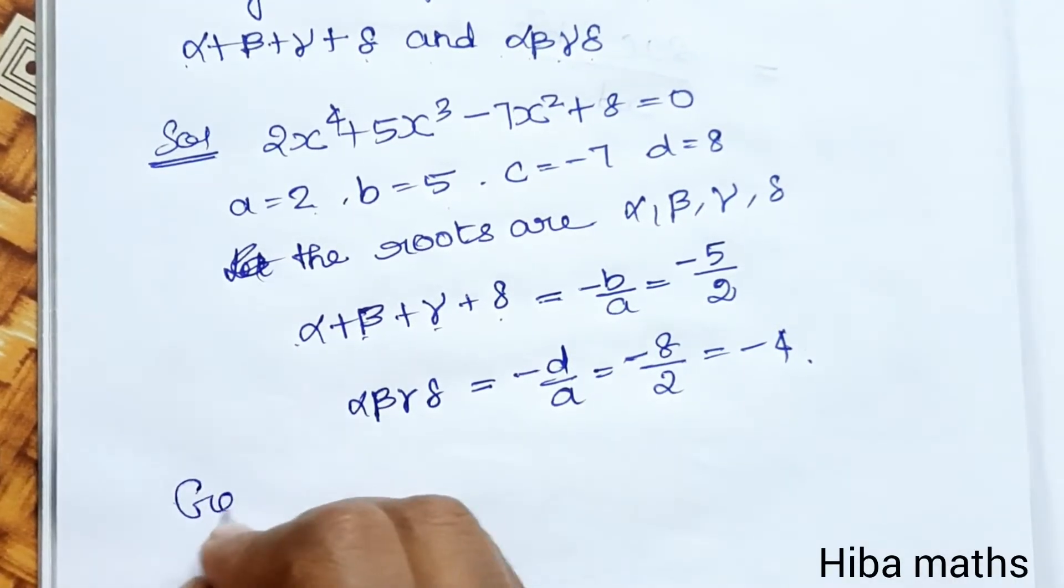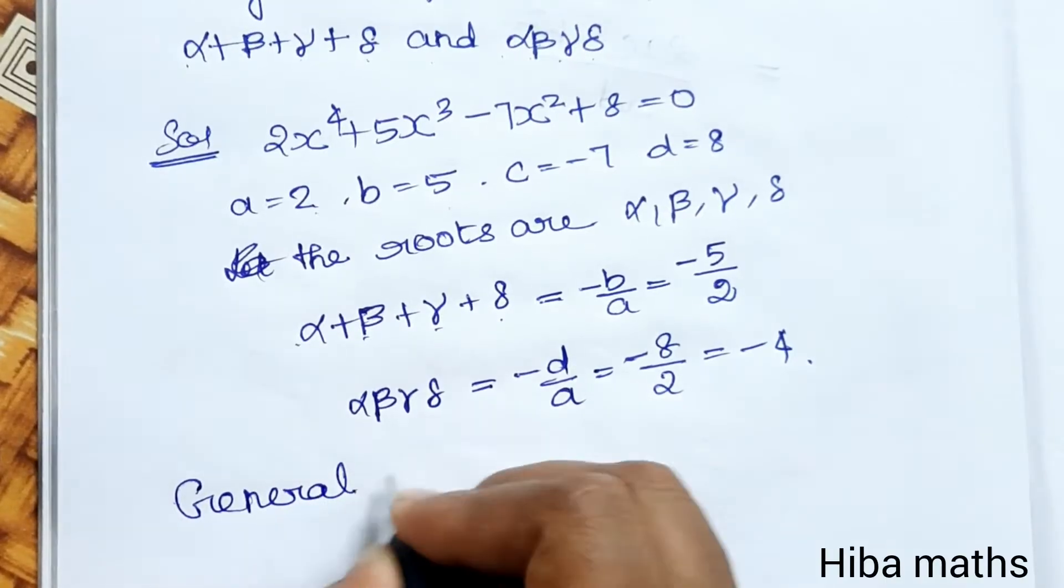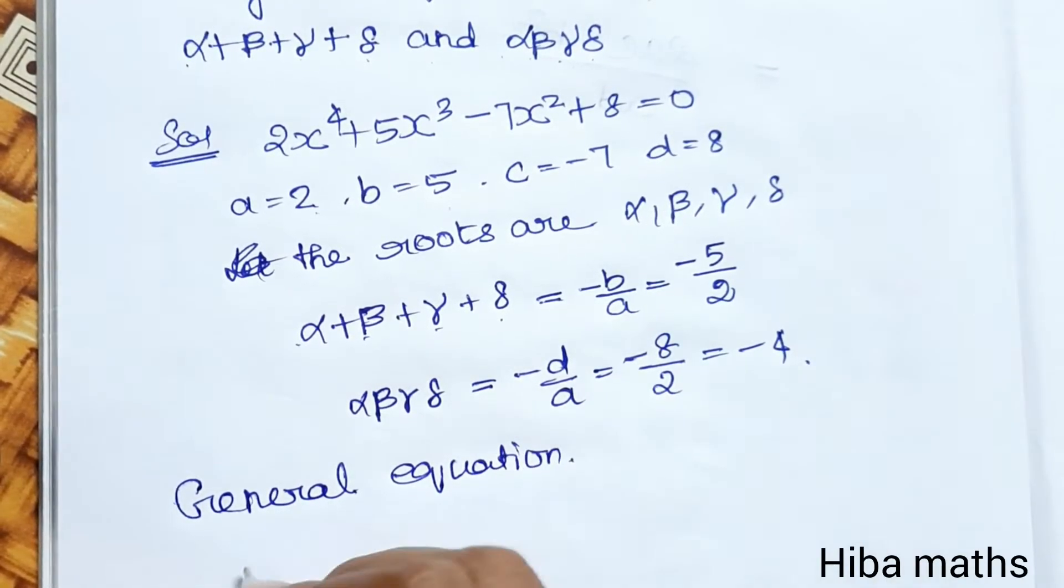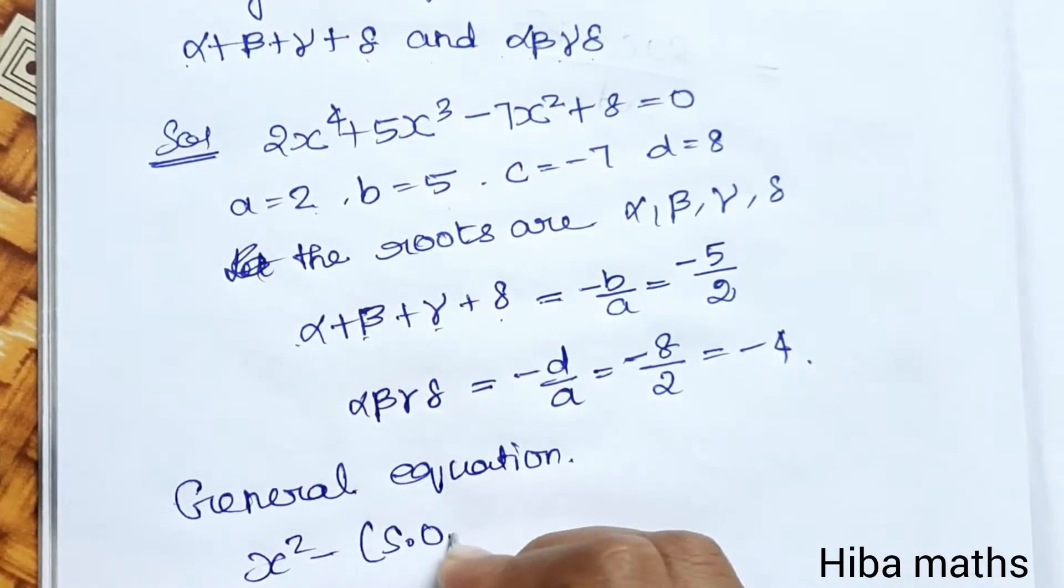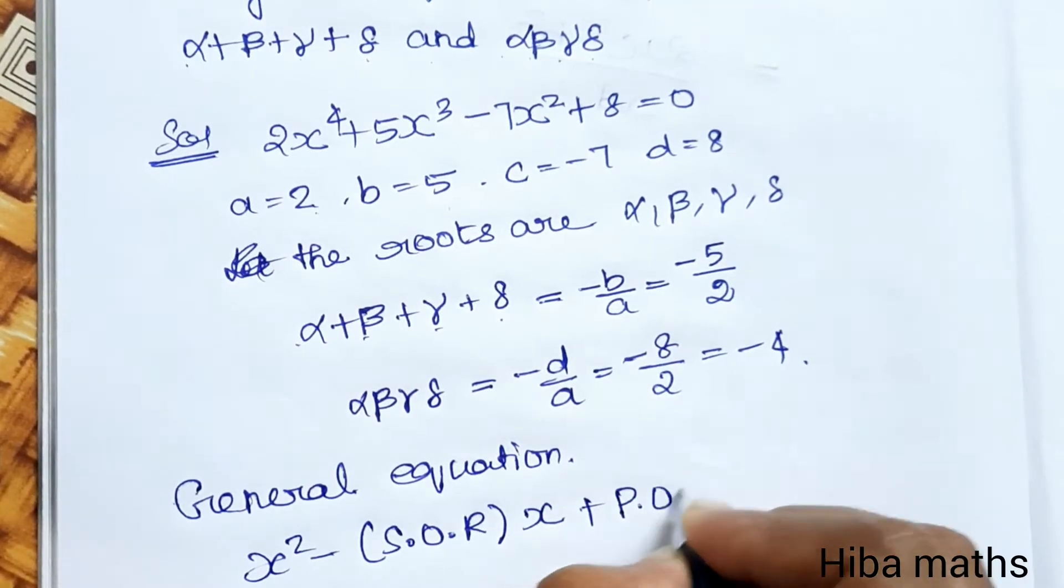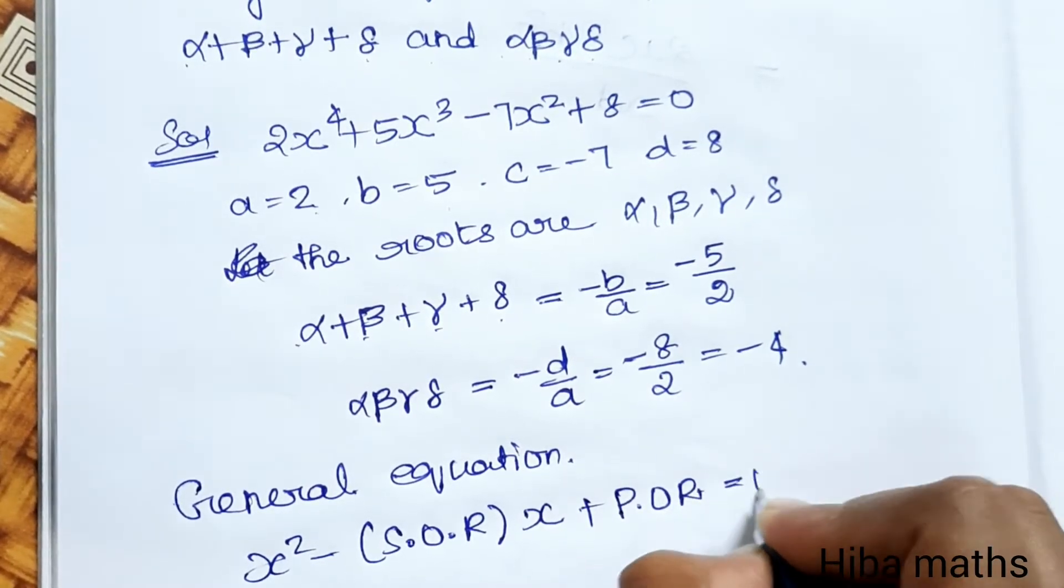General equation: x² - (sum of the roots)x + (product of roots) = 0.